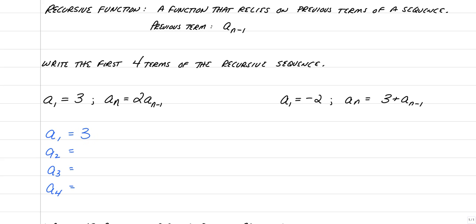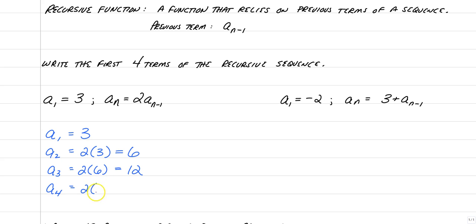A sub 2 is given by a sub n equals 2 times a sub n minus 1, which means 2 times the previous term. So a sub 2 equals 2 times 3, which is 6. A sub 3 is 2 times the previous term 6, giving us 12. And a sub 4 is 2 times the previous term 12, giving us 24.